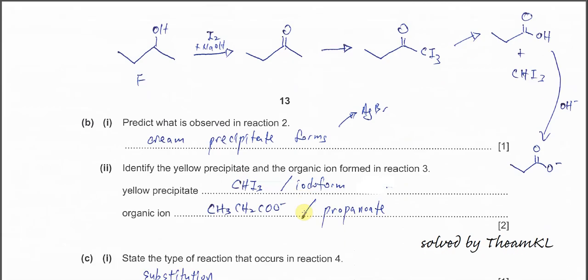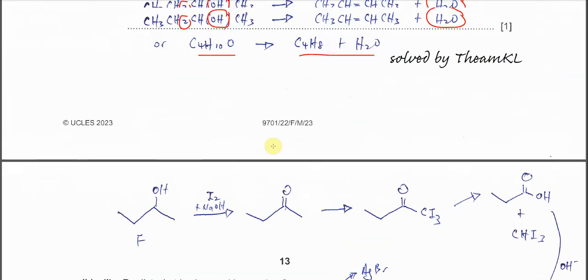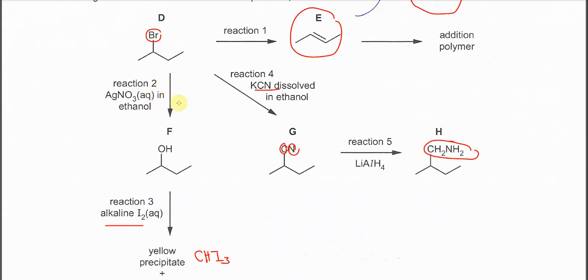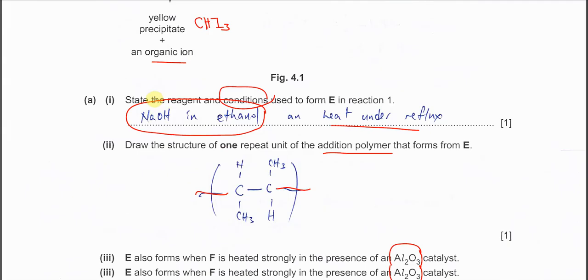Now B1, predict what is observed in reaction 2. Reaction 2, I told you already, silver nitrate in ethanol. So we know that the haloalkane here, this 2-bromobutane, will undergo the hydrolysis. So the bromine will leave as bromide and bromide will combine with silver ion to form silver bromide. So you see cream precipitate.